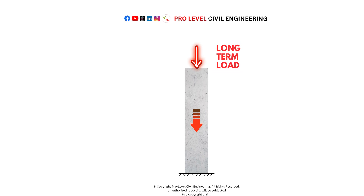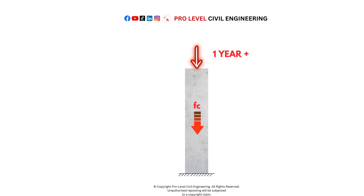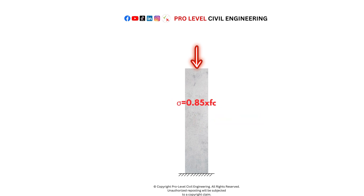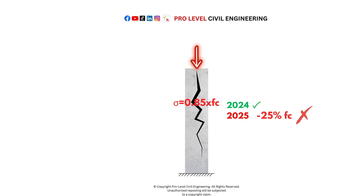In addition to causing creep, long-term loads can reduce the concrete's strength. This is particularly true for concentrically loaded specimens. If the load is applied for a year or longer, the concrete may experience a strength reduction of 15% to 25%. Consider a concrete member loaded with 85% of its ultimate compressive strength, FC. While this load might be acceptable initially, over time, due to creep and the reduction in strength, the member's capacity to carry the load decreases. As a result, the member may seem fine in the short term but could fail later due to the combination of creep and the long-term reduction in strength.